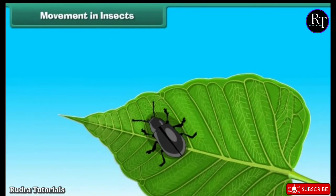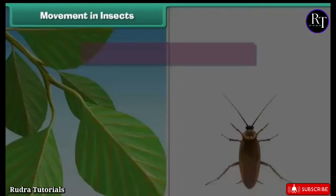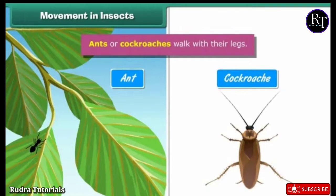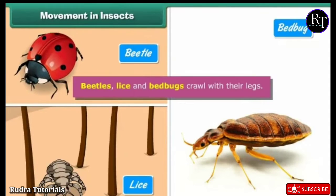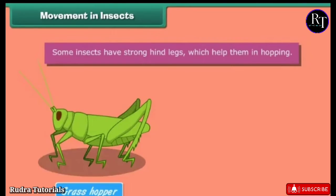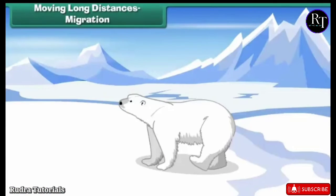Most insects have six legs which help them move from one place to another. Ants and cockroaches walk with their legs. Beetles, lice, and bed bugs crawl with their legs. Some insects have strong hind legs which help them in hopping. Many insects have wings and can therefore fly — the housefly flies with two wings and dragonflies with four wings.